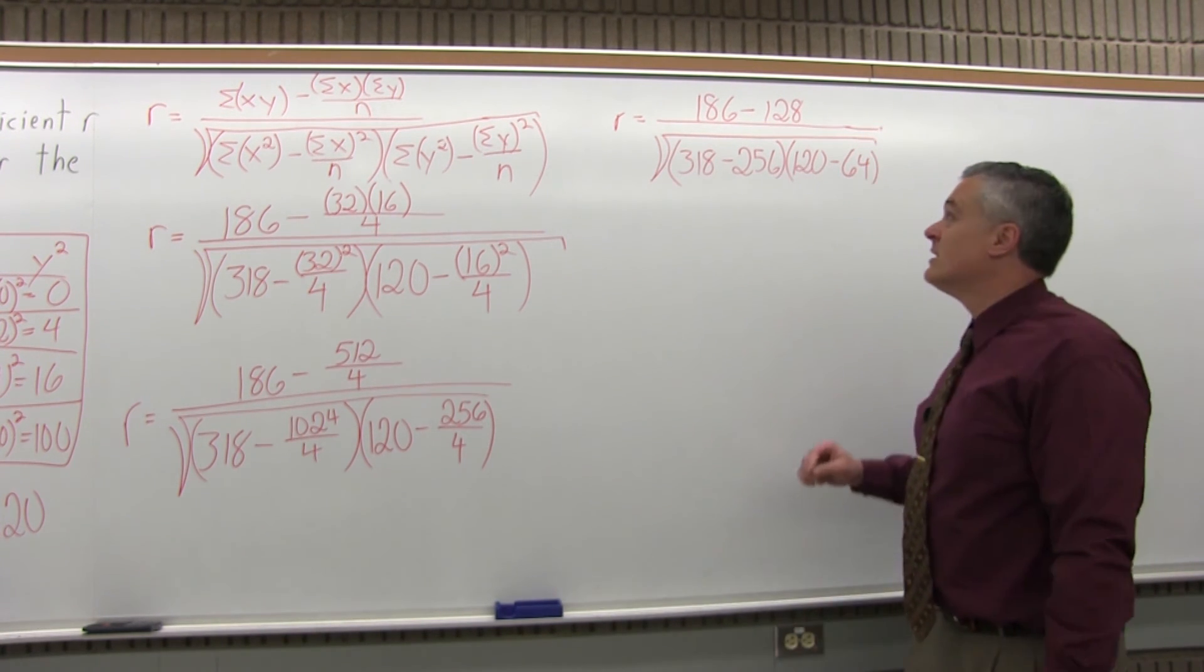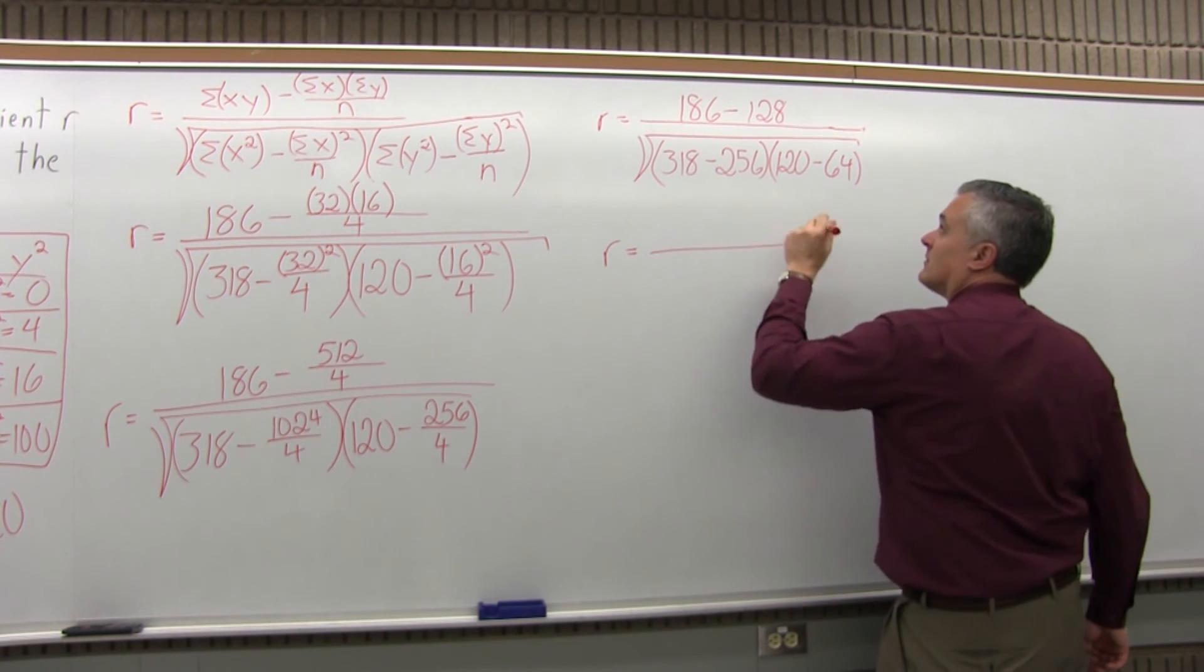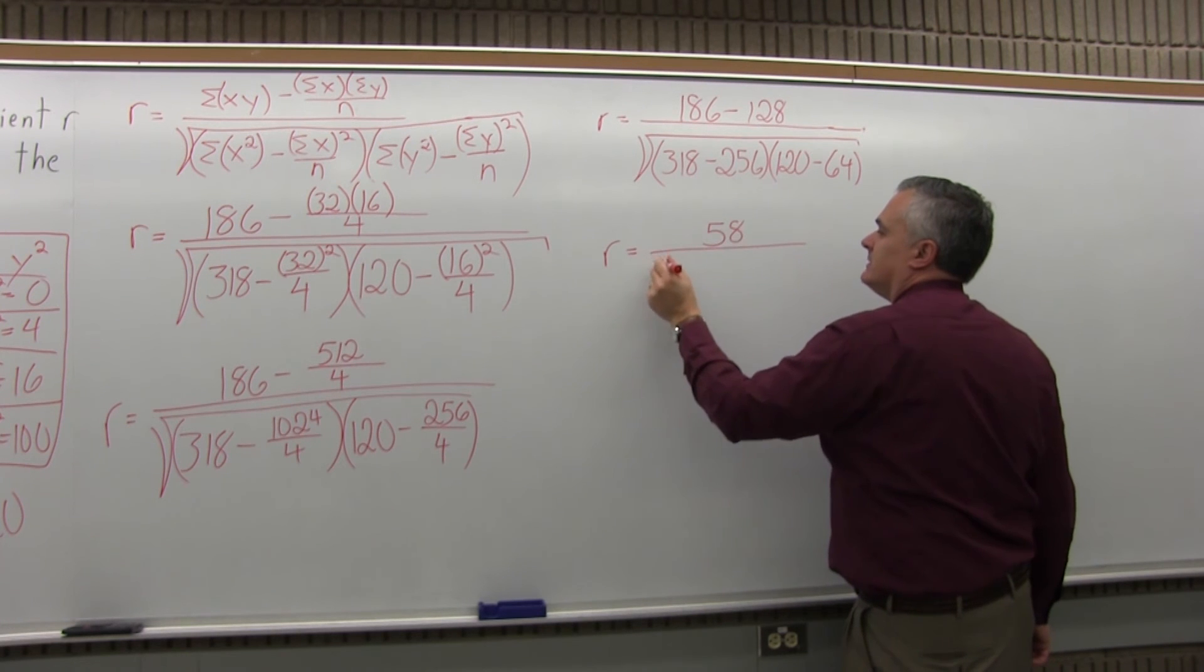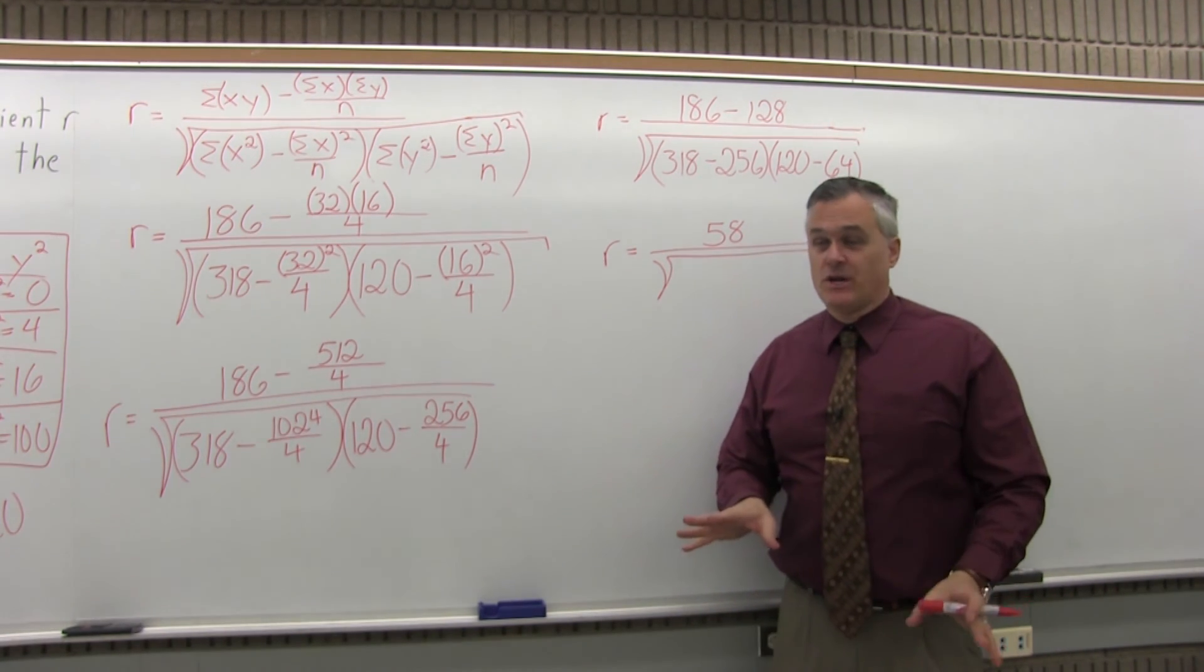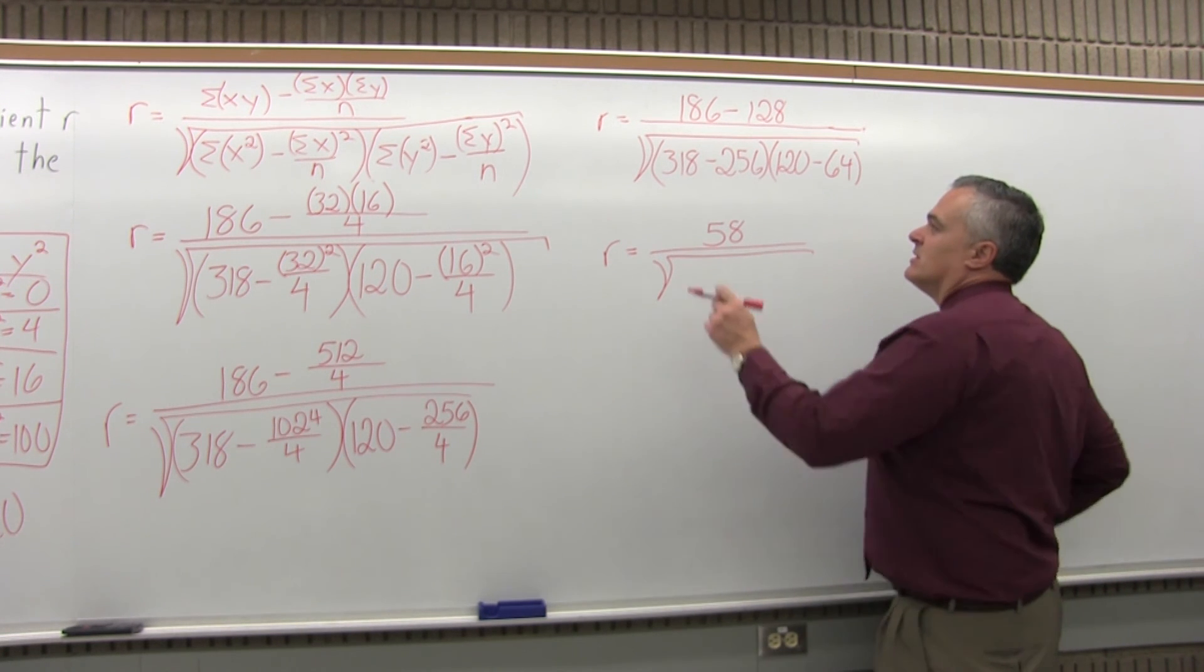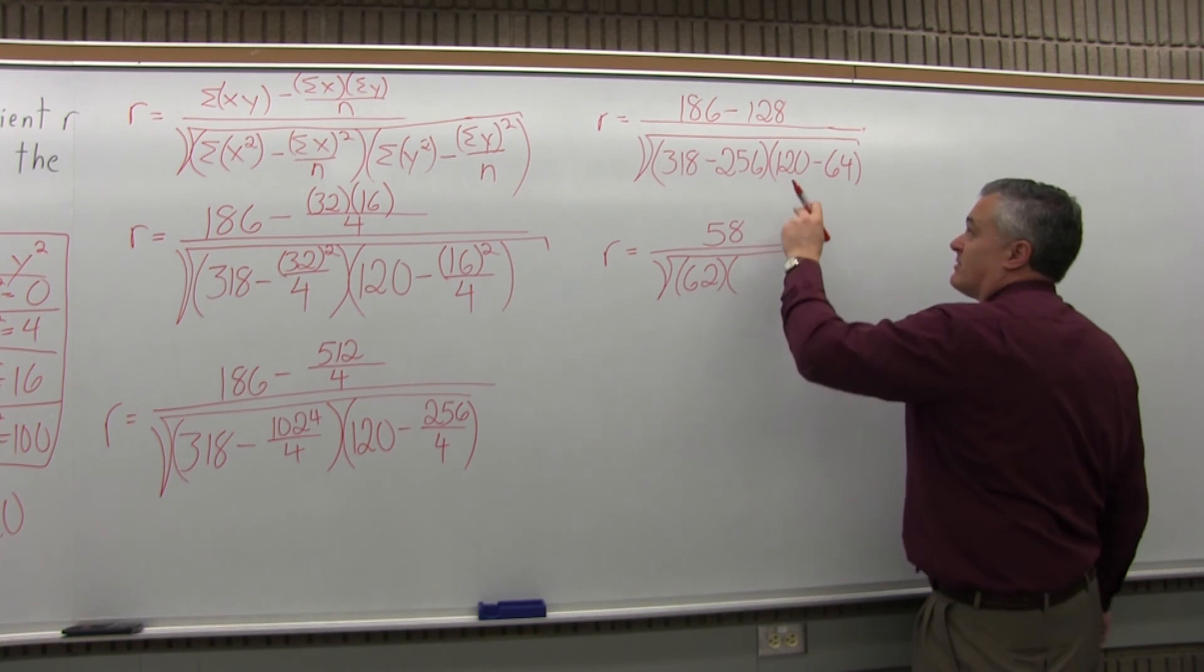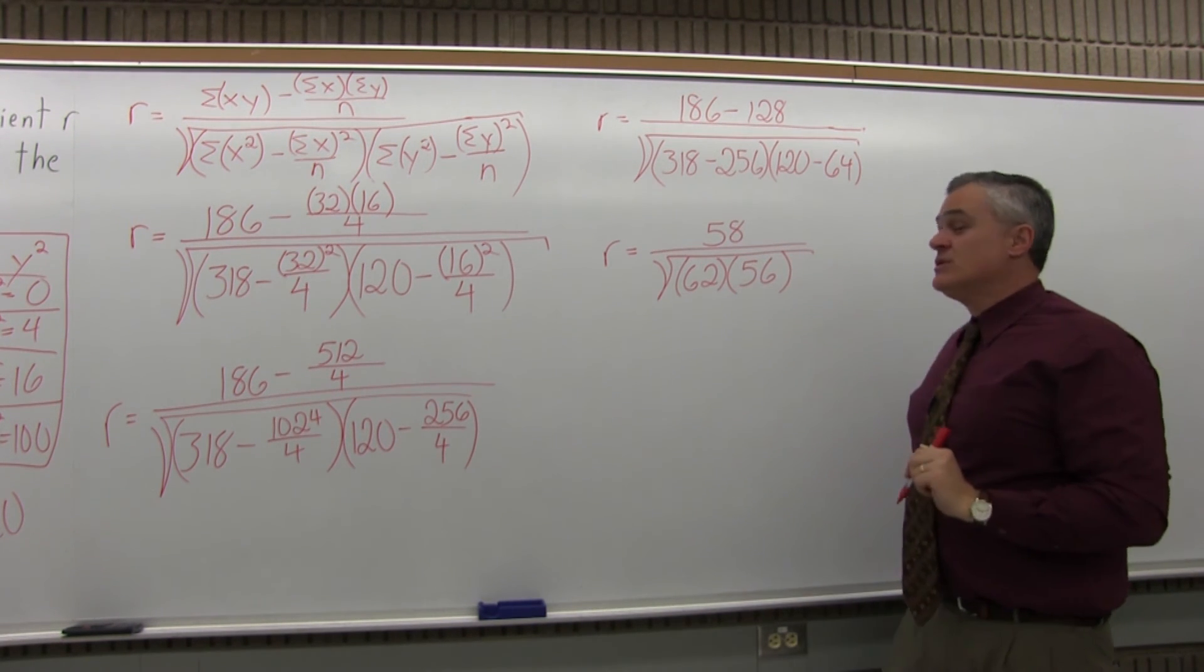Looks a little better now. I'll continue on. What's going to happen in the next step is I have three subtractions that can occur. 186 minus 128 would be 58. Now remember, don't let the square root go away. You have to work all the computation under the square root down to one number, then do the square root, then it's gone. Very common mistake. People will write the square root for the first several steps and just let it disappear on their own before they've done a square root. Don't let that happen either. The first set of parentheses, 318 minus 256 would be 62. And the second set of parentheses, 120 minus 64 would be 56. Now it's looking a little bit better.